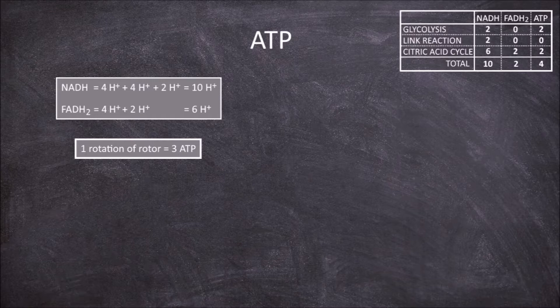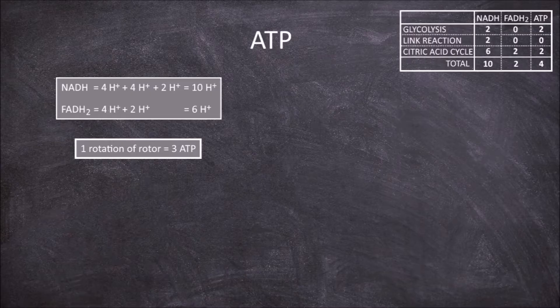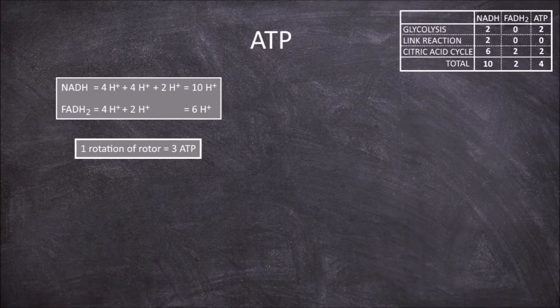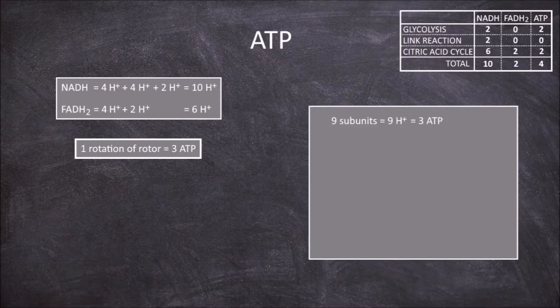This number varies depending on the species the ATP synthase is found in, but usually somewhere between 8 and 15. If it has 9 subunits, it will take 9 hydrogens to rotate once and produce 3 ATP.